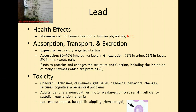In the body, lead binds to proteins, changing their structure and function, and inhibits enzymes. In children this causes IQ issues, poor school performance, difficulty walking with gait problems, headaches, behavior changes, seizures, and cognitive problems. In adults, it causes peripheral neuropathies, motor weakness, renal insufficiency, blood pressure problems, and anemia. With lead poisoning, basophilic stippling — a purple speckled appearance — is seen in red blood cells on a blood smear.